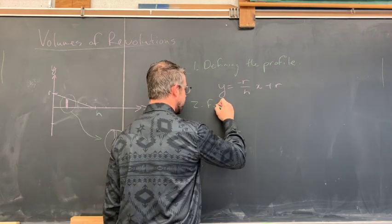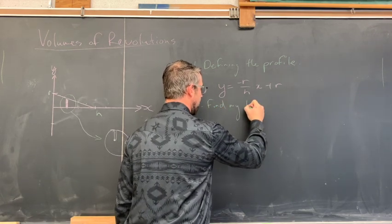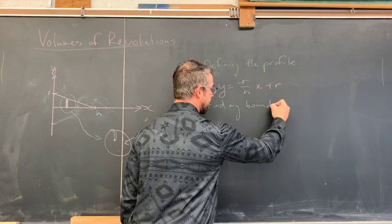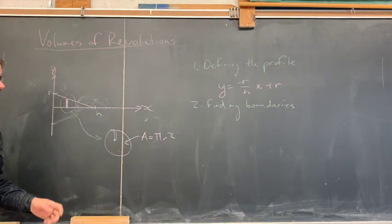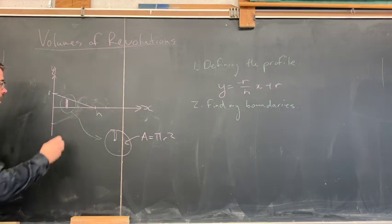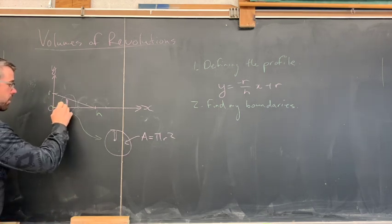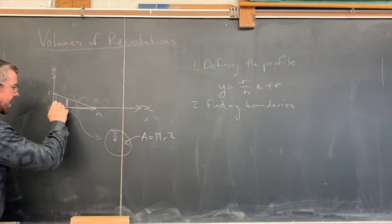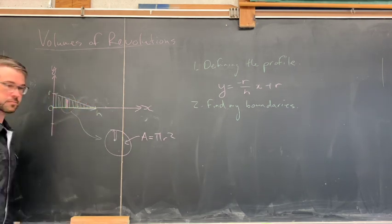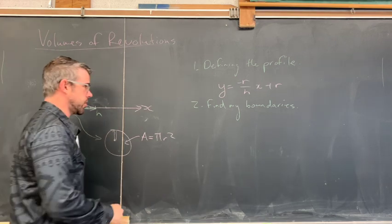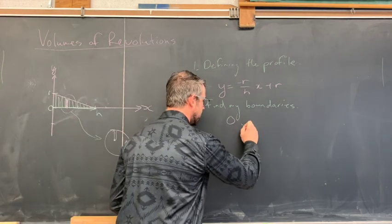Now the next thing I have to do is I have to find my boundaries. Very often the boundaries of your integration are pretty easy to see from your picture. I'm going to integrate from zero all the way to h because I'm going to add up all of these little disks the entire way along. So my limits of integration of my boundaries are going to be from zero to h.